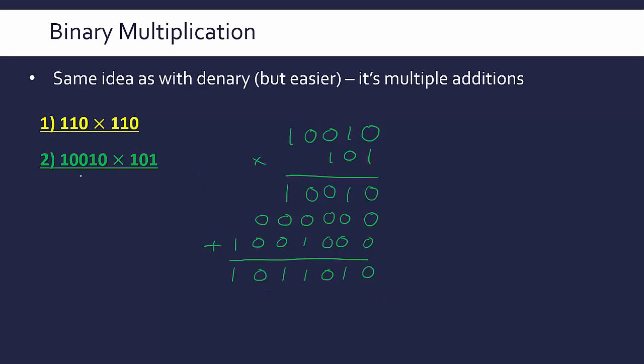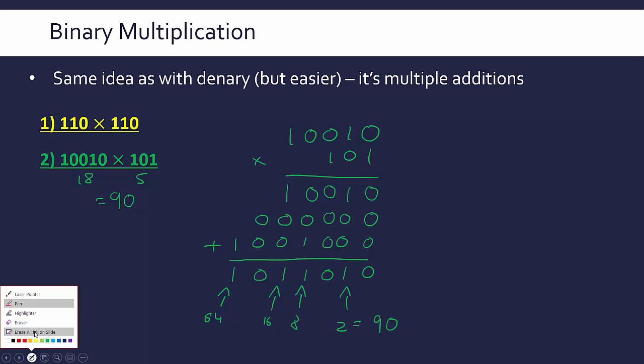So this number over here is 18, this number is 5, and so 18 times 5 should equal 90, right? So we can test it. So we've got 64 here, 16 here, 8 here, and 2 here, which should add up to 90. Yeah, perfect.